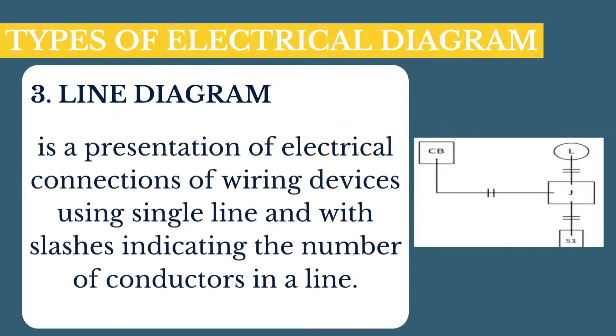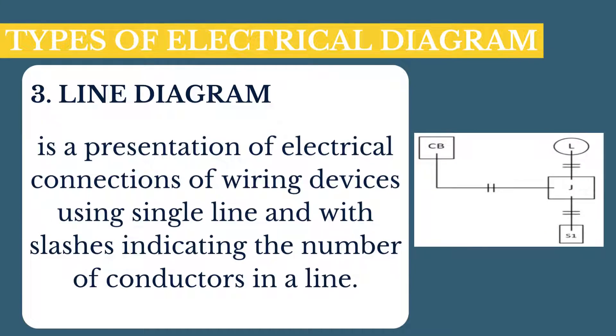Line diagram is a presentation of electrical connections of wiring devices using single line, with slashes indicating the number of conductors in a line.